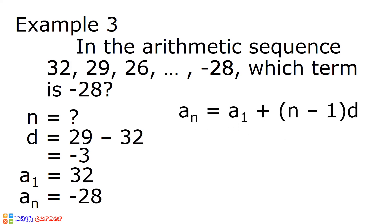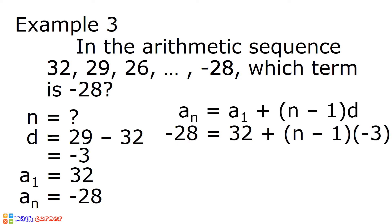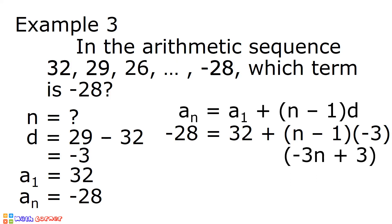Let us substitute all the given values to our formula. Negative 28 goes to a sub n, 32 to a sub 1, and negative 3 to d. After substitution, we have negative 28 is equal to 32 plus quantity n minus 1 times negative 3. Negative 3 times n minus 1 is equal to negative 3n plus 3. And we have negative 28 is equal to 32 plus negative 3n plus 3. Let us combine 32 and positive 3, and we have 35.